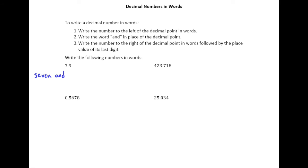And then write the number to the right of the decimal point in words followed by the place value of its last digit. Well there's only one digit here in nine so we would just say nine. And then what place value is that in? Of course that's in the tenths place. So 7.9 is properly said as seven and nine-tenths.